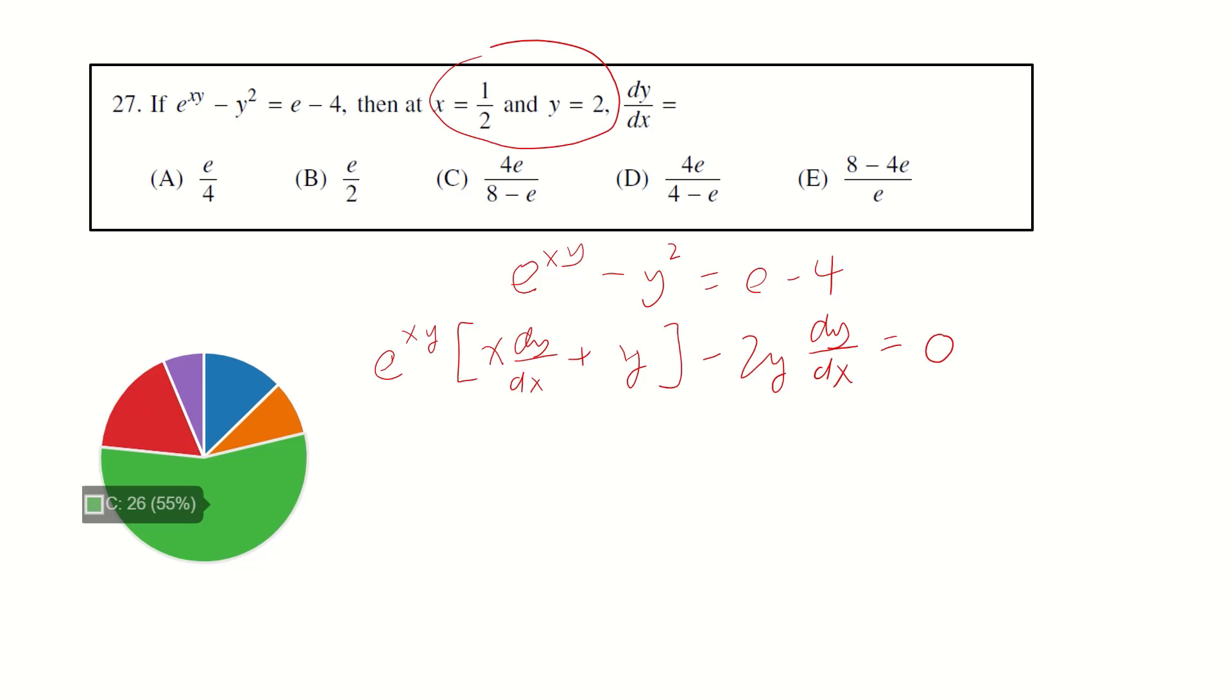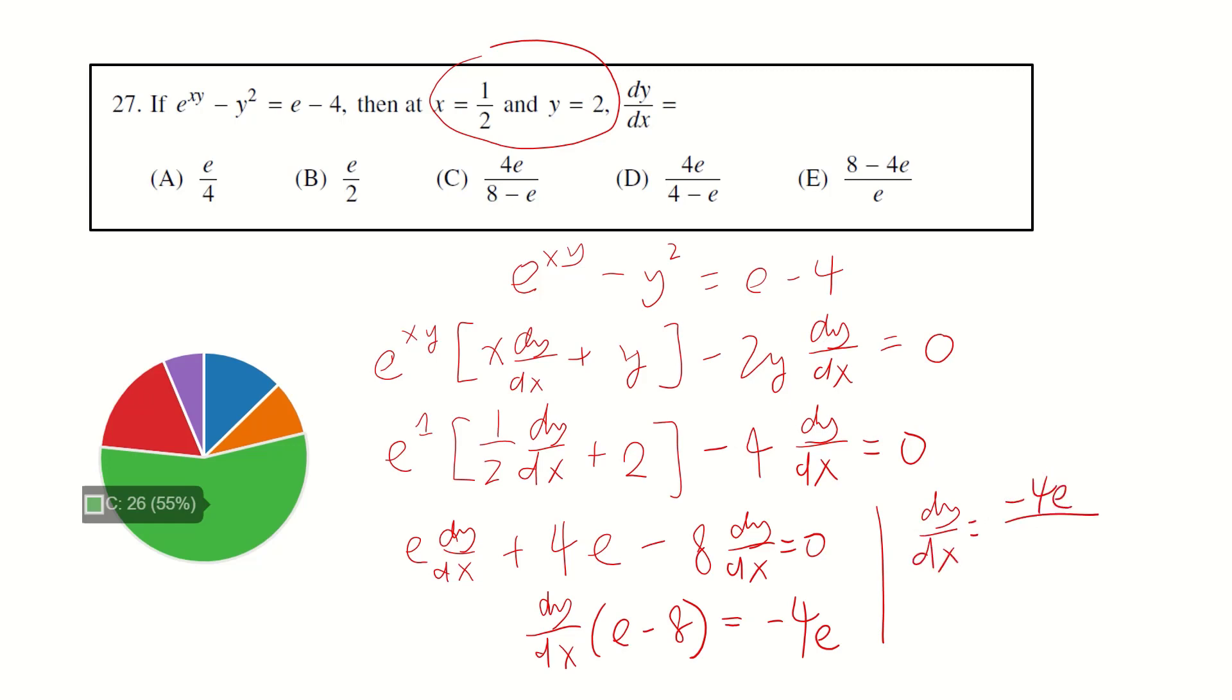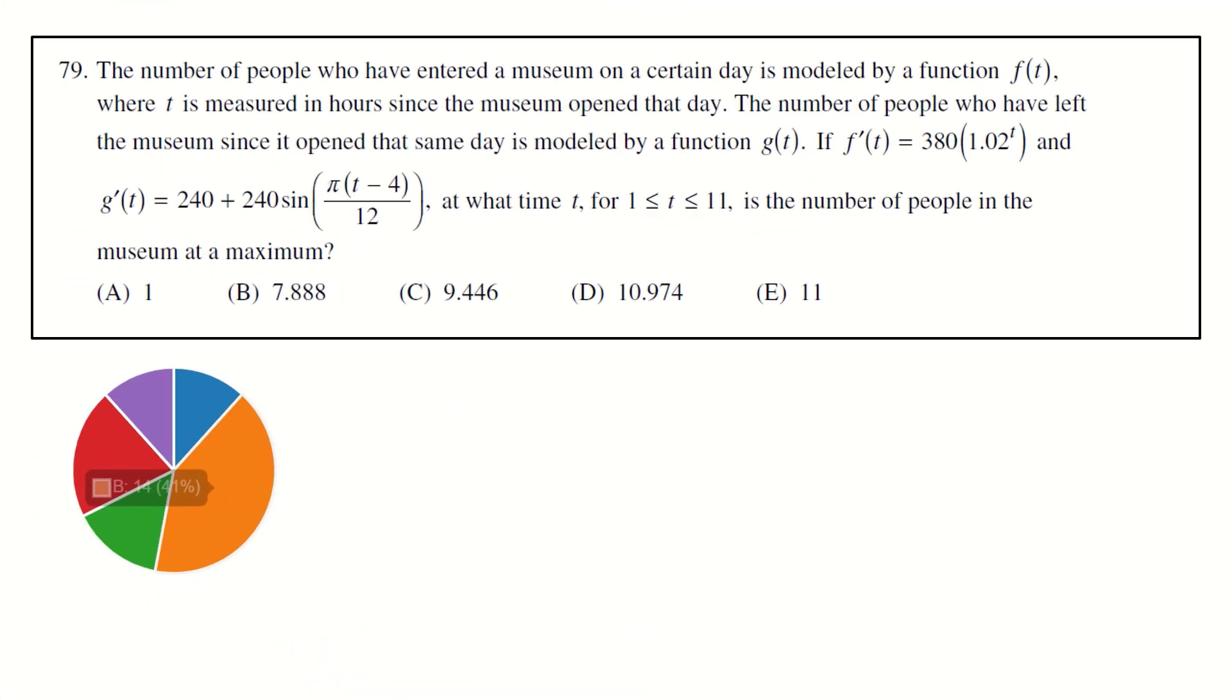Then we can just substitute the value of x and y. Right now x equals to half, y equals to 2, and xy equals to 1. Multiply each term by 2. So this will be e dy/dx plus 4e minus 8 dy/dx. So dy/dx times e minus 8 equals negative 4e. Therefore dy/dx equals negative 4e over e minus 8, or 4e over 8 minus e. That is C.